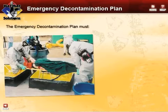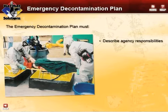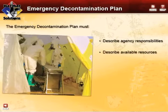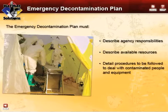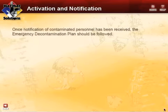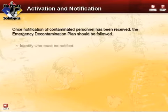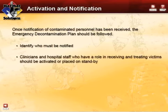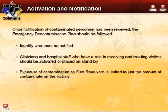The emergency decontamination plan describes the agencies and department responsibilities as well as the available resources at the hospital and in the community. The plan should detail the procedures to be followed in dealing with contaminated people and equipment, with a special emphasis on self and buddy decontamination. Once the hospital receives notification of a contaminated person, the emergency decontamination plan should identify exactly who must be notified. Clinicians and other hospital staff that have a role in receiving and treating contaminated patients should be activated or placed on standby. Since the hospital is far from the incident, the exposure of first receivers is limited to the amount of contaminant on the victims, their clothing, and personal effects.